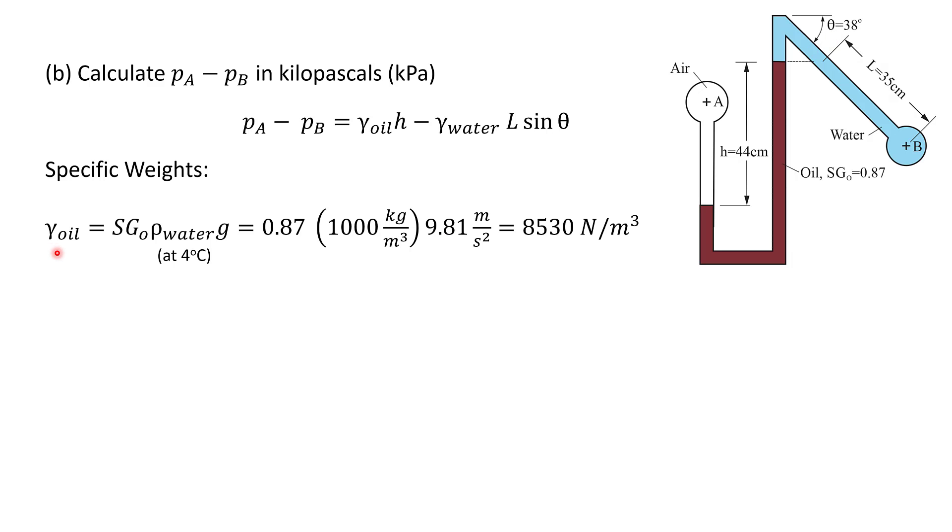The specific weight of oil is the specific gravity times the density of water, technically at four degrees C, though it only makes a slight difference, times g. So 0.87 times 1000 kilograms per cubic meter, that's the density of water at four degrees C, and then g, 9.81 meters per second squared, which gives the specific weight of oil as 8530 newtons per cubic meter. For water, I've taken the density of water at room temperature at 20 degrees C, so 998 kilograms per cubic meter times 9.81 meters per second squared gives the standard 9790 newtons per cubic meter.